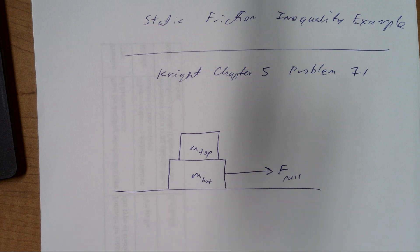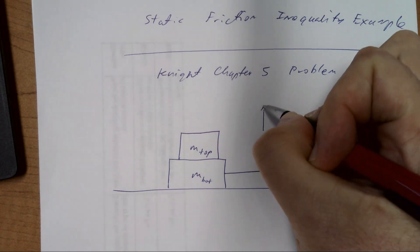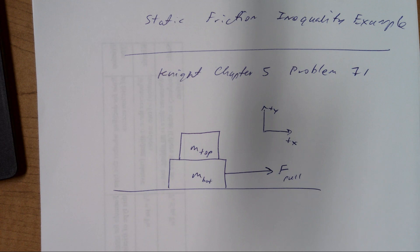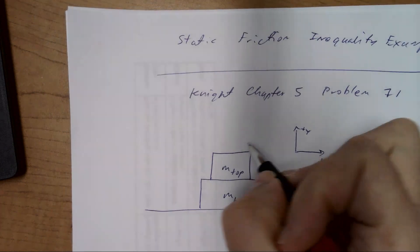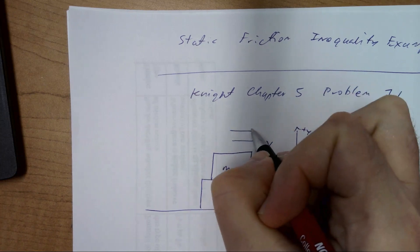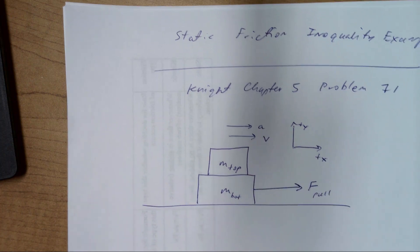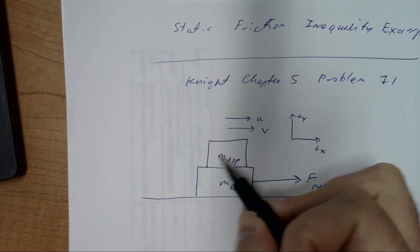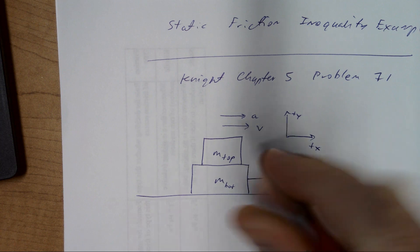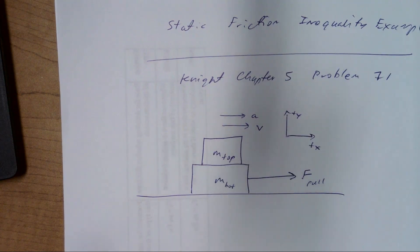So this is a net force problem, and we need to start out by identifying a coordinate system — I'll put that for my x and y directions. Both blocks are moving to the right, so their velocity vector is to the right. There's going to be a net force applied to the right, causing an acceleration to the right. The objects are going to remain connected with no sliding, so they're moving as a unit with the same velocity and the same acceleration.